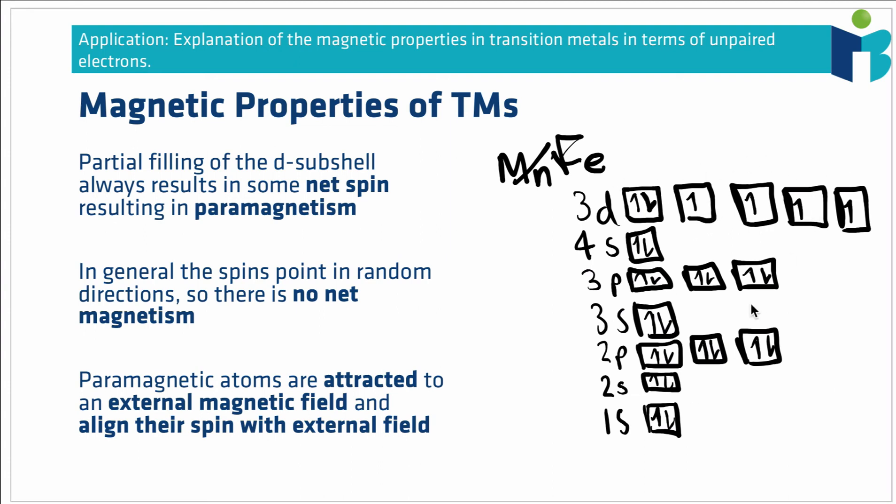Now this doesn't mean that the materials are magnetic. So I could have a collection of iron atoms, they all have some net spin, because they all have these four unpaired electrons. But in the absence of any kind of influencing factors, those spins are all going to point in random directions. And the end result is that they have no effect, because they're all randomly oriented and they all cancel each other out.